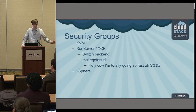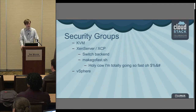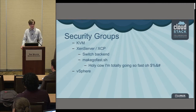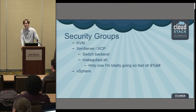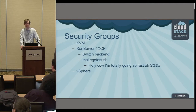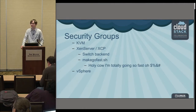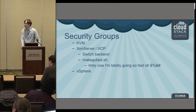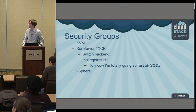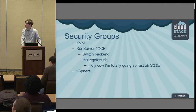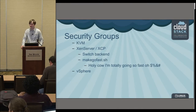Besides VLANs, another possible networking issue is security groups. With KVM and XenServer, you can have VMs that are inaccessible in one direction or another because a security group you've configured is not being applied. Also make sure security groups are actually enabled — you can create a basic zone with no security groups, so you might be wondering why they're not working if they were never enabled.